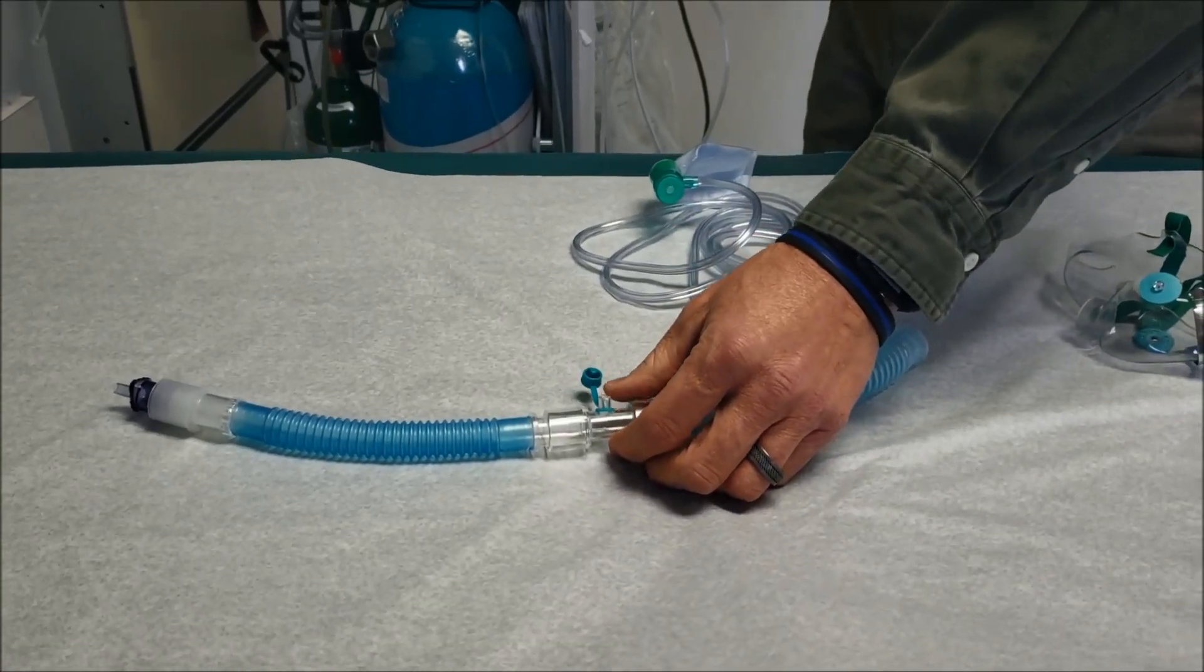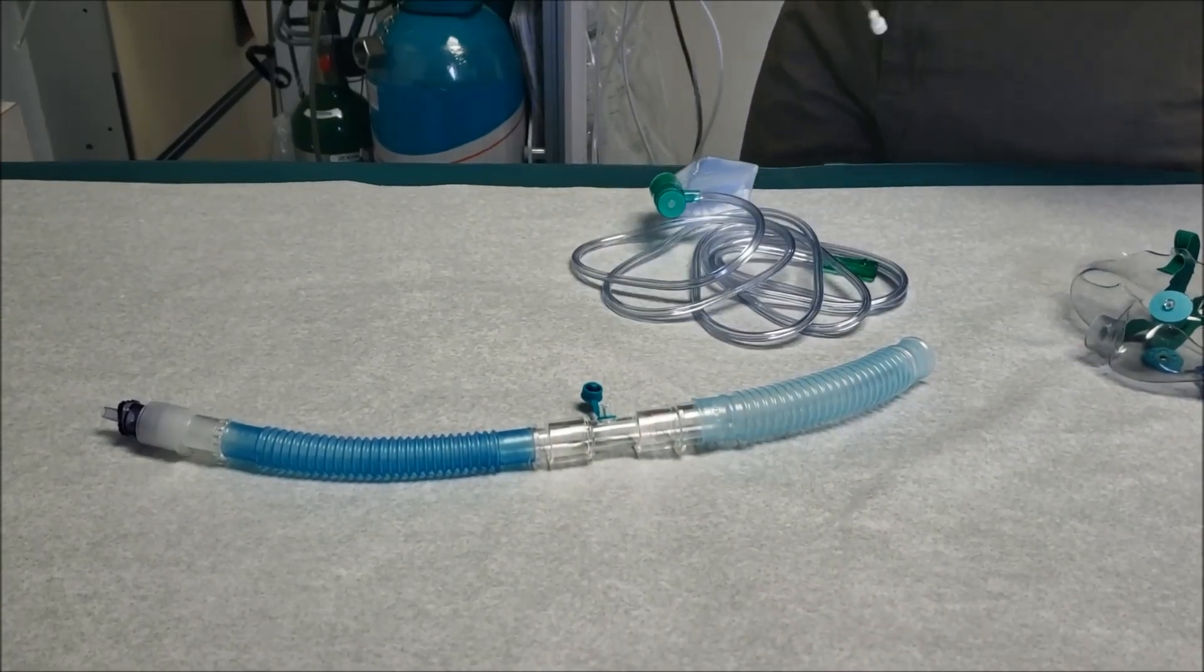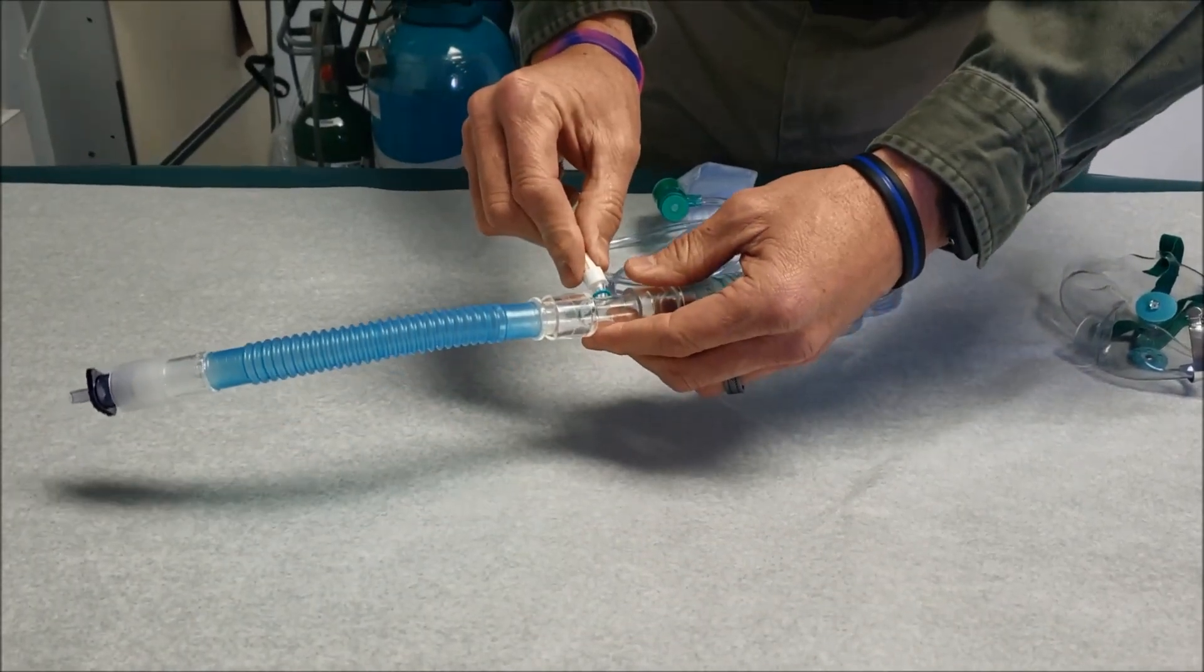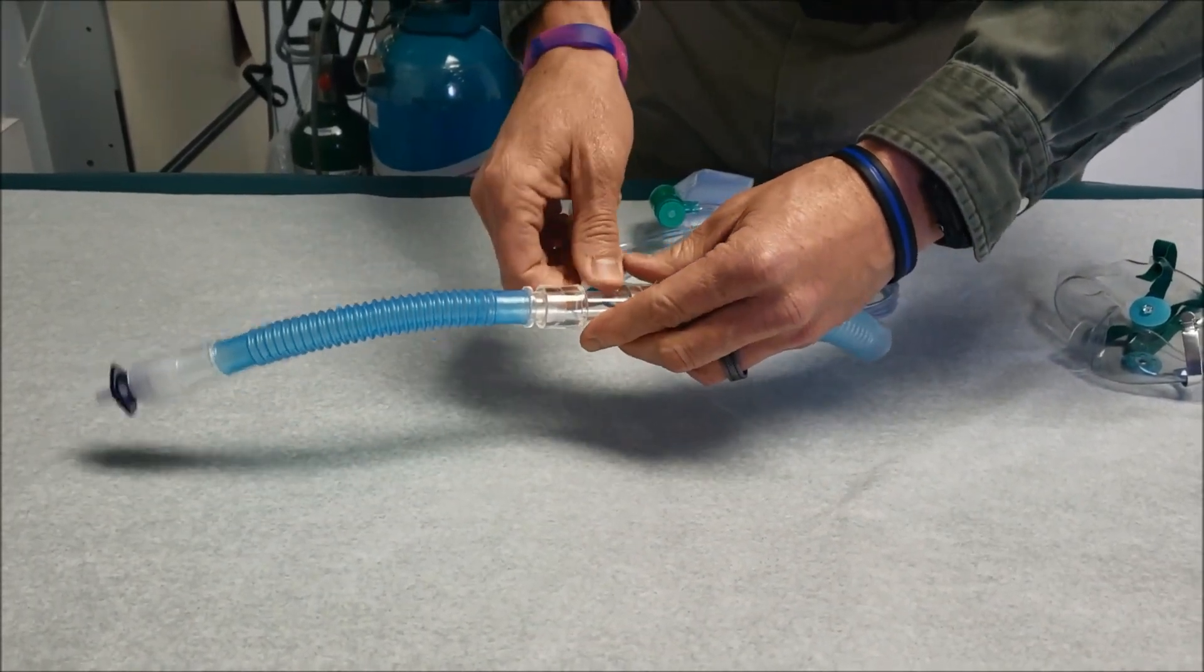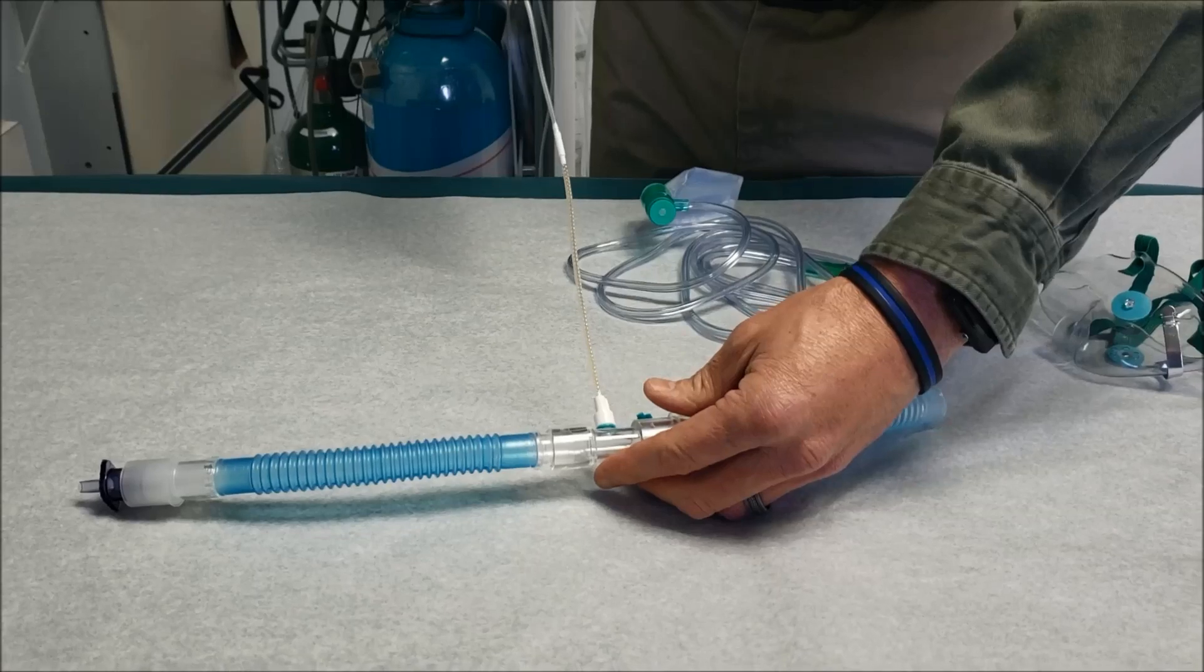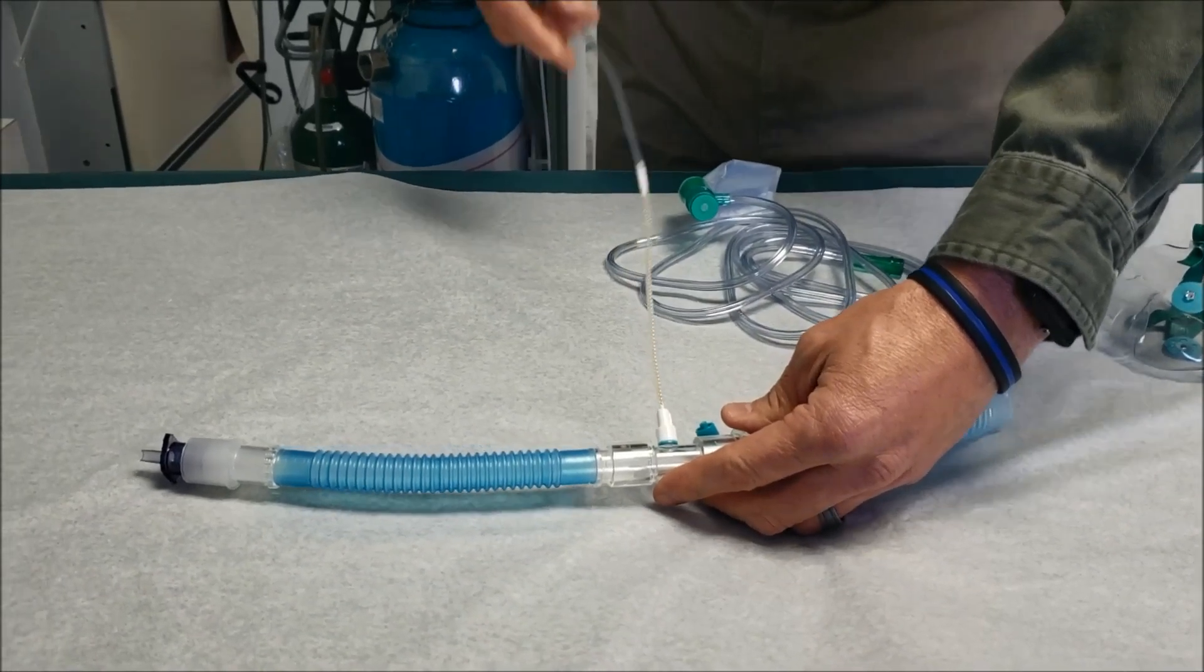This piece here is our sample line attachment. The sample line is what pulls back the sample to the machine to assure that our nitric oxide level is accurate and maintains accurate.